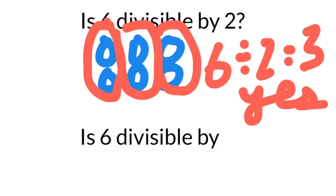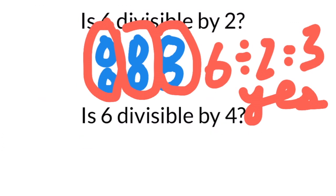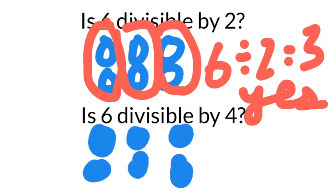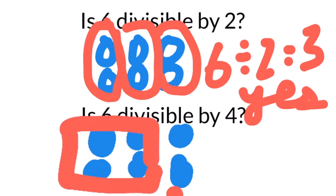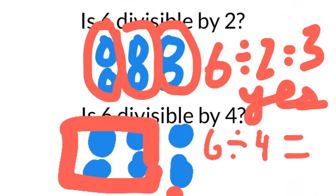Is six divisible by four? If I put six items into groups of four, you see I've only got one group of four with two left over. So six divided by four is one whole with a remainder of two. It is not divisible by four.